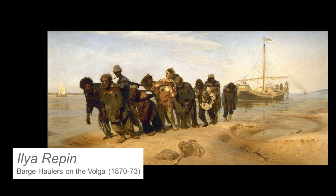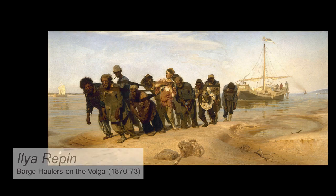Ilya Repin, Barge Haulers on the Volga, 1870–1873. Of the painters known as the Wanderers, none surpasses Repin. Barge Haulers on the Volga shows in detail the back-breaking labor of hauling barges up a river, labor long abundant in Russia due to the enslaved bulk of the population known as serfs. His paintings often presented disturbing social messages or shocking versions of historical events. He also painted famous figures of his day, including fascinating renditions of Tolstoy. Repin's late works are awash in Impressionism.